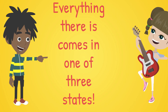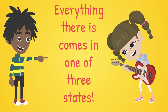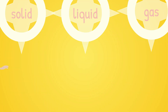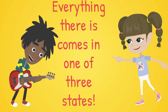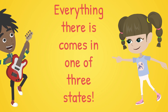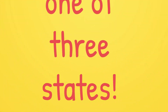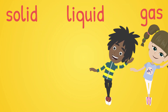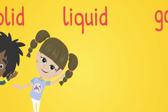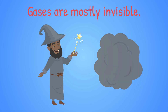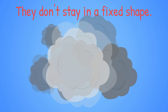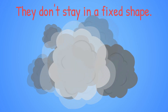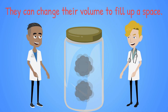Everything there is comes in one of three states: solid, liquid, or gas. Gases are mostly invisible. They don't stay fixed in a shape. They can change their volume to fill up a space, be squashed and blown around.